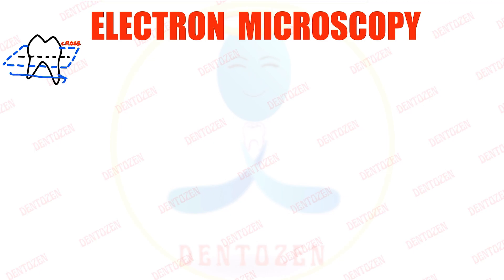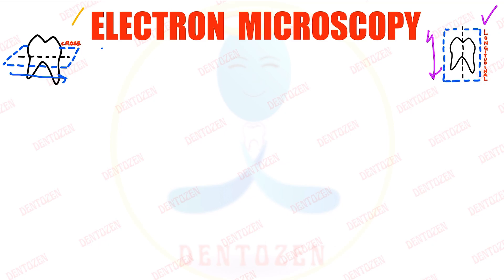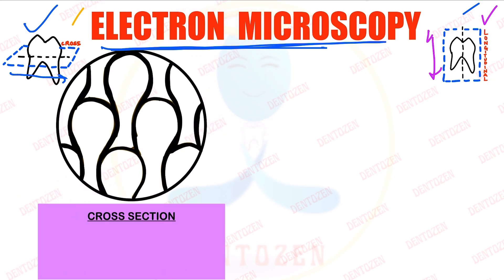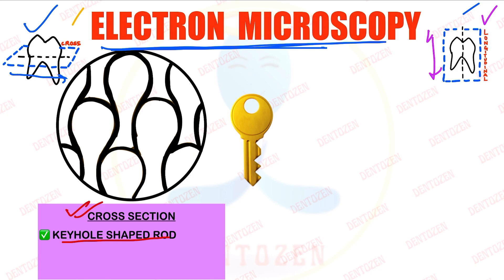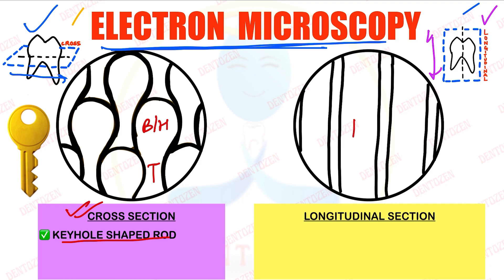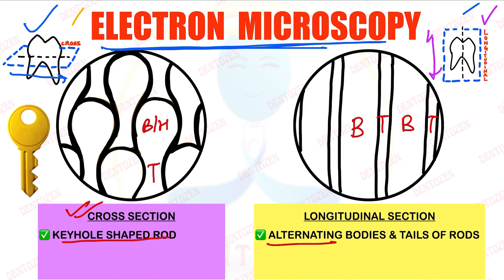For electron microscopy, we first need to cut sections of teeth. If the section is cut along the horizontal plane it is called the cross section, and if cut along the long axis it is called the longitudinal section. The electron microscopic appearance of enamel is different in cross section versus longitudinal section. In the cross section, the appearance is keyhole-shaped — with the body or head and the tail. In the longitudinal section, we see alternating bodies and tails.